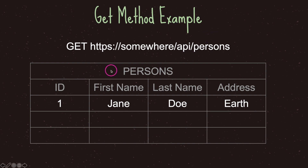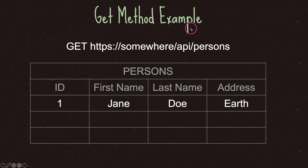Here I have a table called persons. It has four different types of information: an identification number, first name, last name, and address. With the GET method, we wish to retrieve all data in the persons table. When we use the GET method, we will get back all the information in the persons table, which would include the identification number, first name, last name, and address.